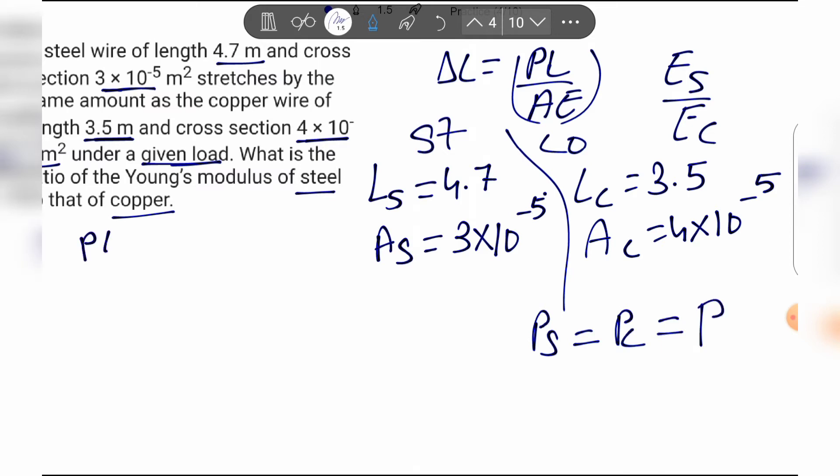Using the formula PL by AE, the elongation of steel equals the elongation of copper. So PL by AE for steel wire equals PL by AE for the copper wire.